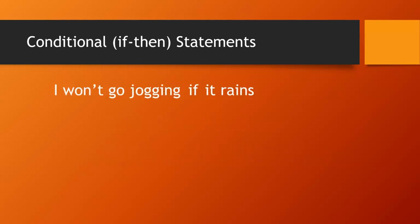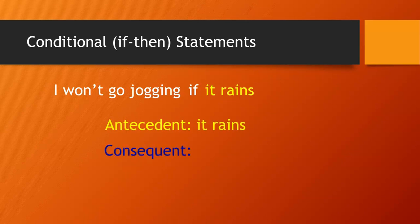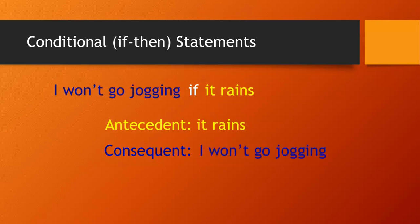Now let's rewrite the conditional statement one more time as a statement that means exactly the same thing, and try to identify the antecedent and the consequent. The antecedent immediately follows the word 'if,' but in this case that means the antecedent is at the end of the sentence: 'it rains.' Because of the structure of the sentence, the consequent has now moved to the front: 'I won't go jogging.' The word 'then' is missing in front of the consequent this time because we just don't talk that way — we wouldn't say 'then I won't go jogging if it rains.' Regardless, 'I won't go jogging' is still the consequent.